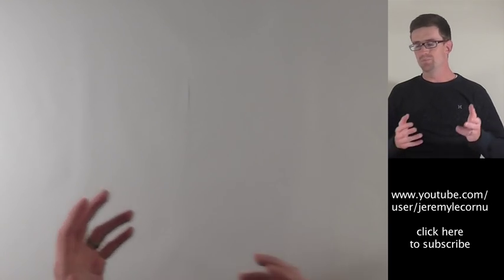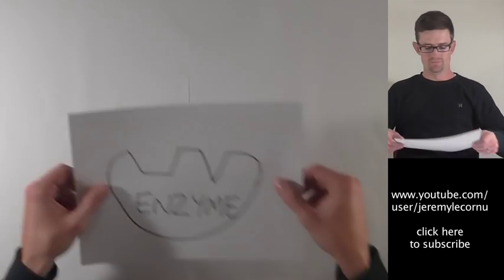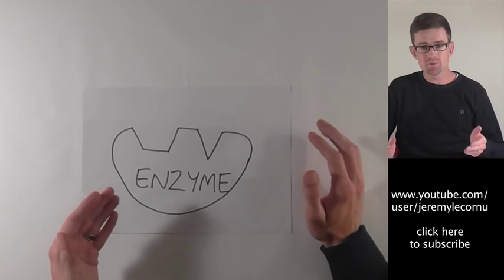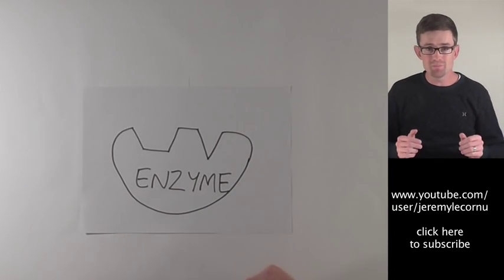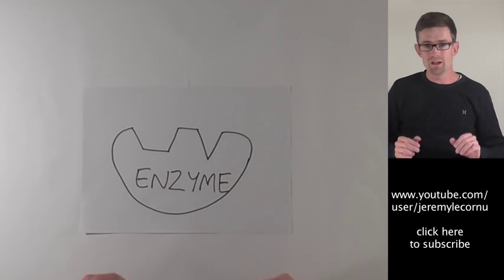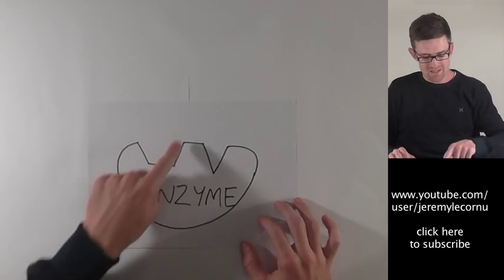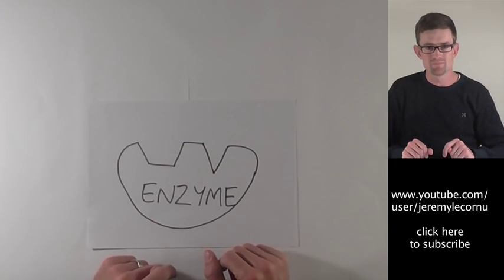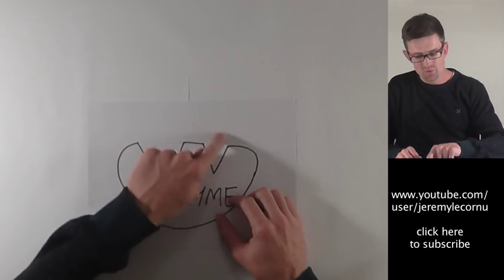I'm going to give you a basic example of an enzyme and how it works. Here's our enzyme. Enzymes are made of protein. They're actually made by cells. So here we have our enzyme made of protein. You can see it has this area here where molecules can fit. That area is called the active site.